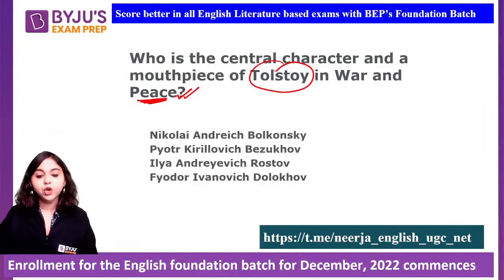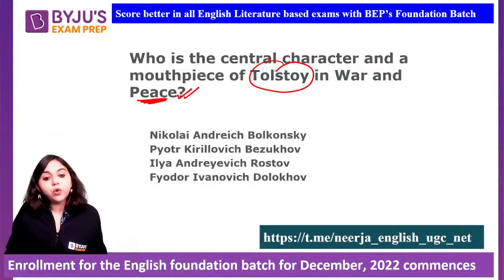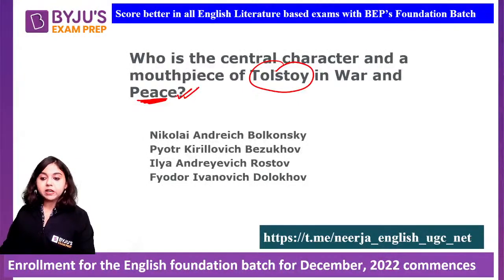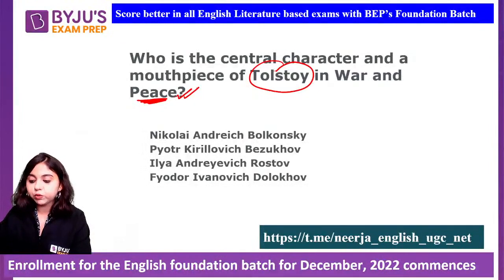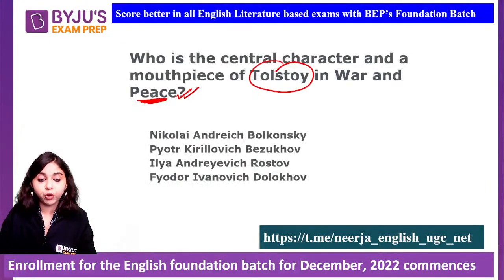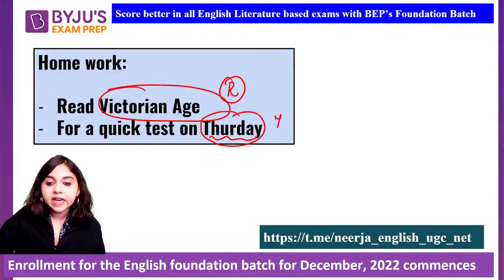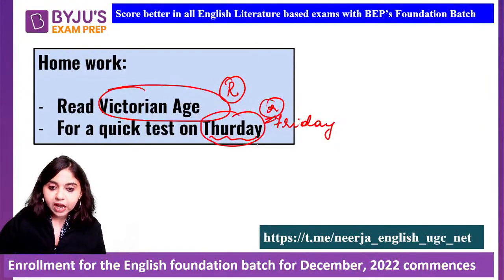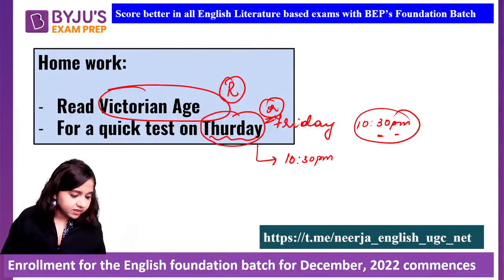We'll pause here and continue. Today's lecture's primary focus was to make sure all of you are oriented towards studying 19th century literature. 19th century literature is not just British writings — other writers also have to be covered. Do take a tour of the concepts we've looked at. Read the entire Routledge entry for Victorian age cover to cover — that is your homework. Be prepared for a quick test on Thursday or Friday.